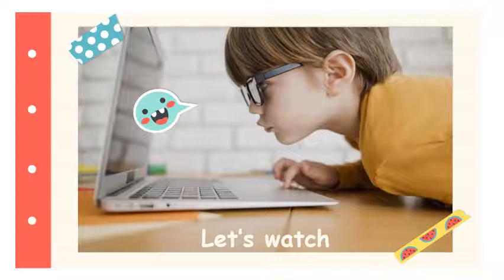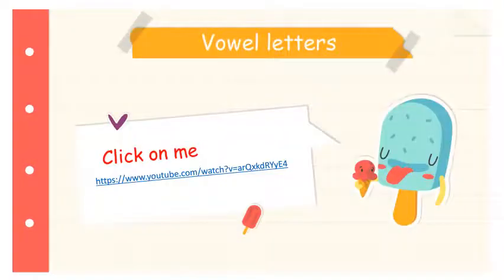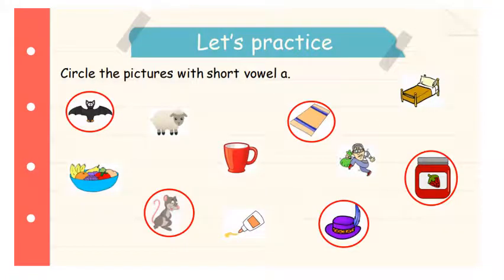Now what you have to do is click on a link and watch a very nice video. This is the link — all you have to do is click here. It's about the vowel letters, okay? Now let's practice. What you have to do is circle the pictures with short vowel A.